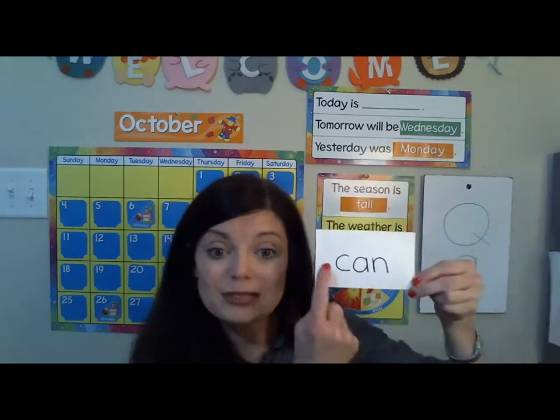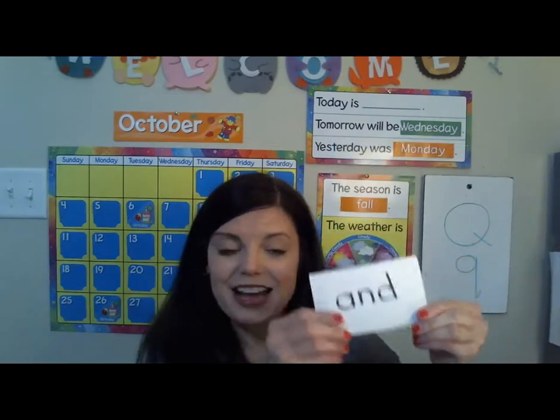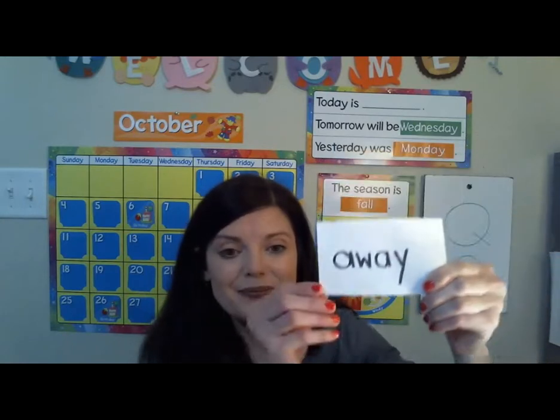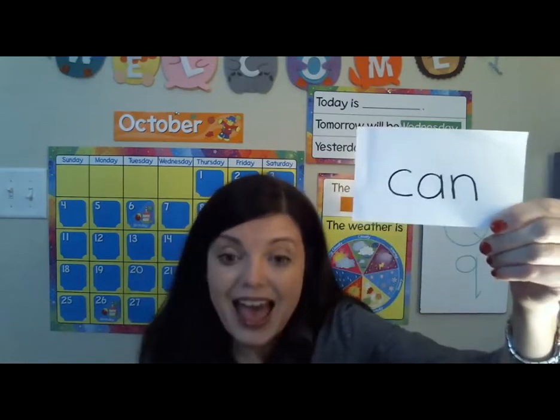Now we did our letter, our number, our shape, and our color. We didn't do our sight word yet — so let's do that. We've been working on a new sight word this week and that word is can. Can you say can? Can. Very good. Let's see if you remember some of the words we've already learned. A. Very good. And. Good job. Away. Big. Blue. Now these are the pre-K Dolch sight words — you can get a copy of those and practice more if you want to. Once more, what's the word we're working on this week? Can. Very, very good.